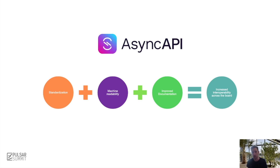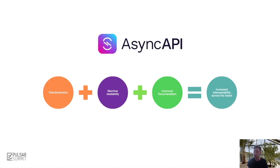AsyncAPI covers everything from contact details to the event schemas, where to subscribe, and everything else. From our point of view, there are a couple of main benefits to using a specification-based approach: standardization, machine readability, and improved documentation. The specification provides a standardized way of defining an API's functionality and behavior, making it easier for different services to communicate. It provides a machine-readable format that can be easily parsed and processed by tools and scripts. And if everyone reads and writes the same documentation format, we can utilize that as a standard for how we document our event-driven APIs at the LEGO Group.